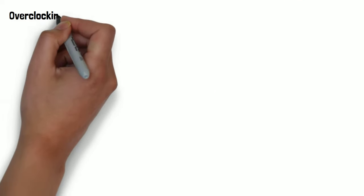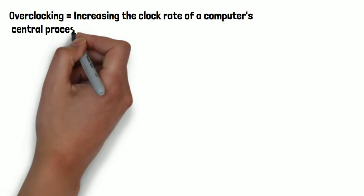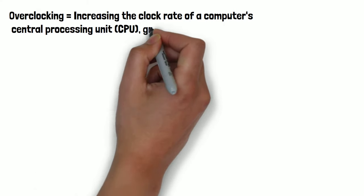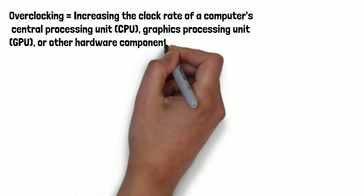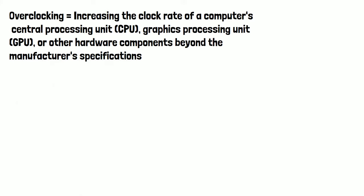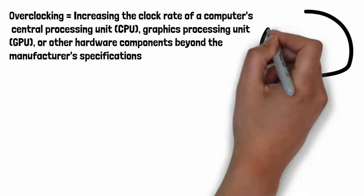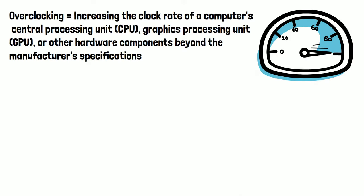Overclocking is the process of increasing the clock rate or frequency of a computer's CPU, GPU, or other hardware component beyond the manufacturer's specifications. This is typically done to improve the performance of hardware, such as increasing the processing speed of the CPU or GPU, thereby potentially enhancing the performance of the entire system.